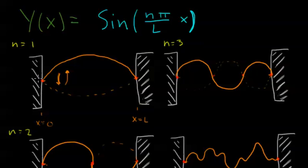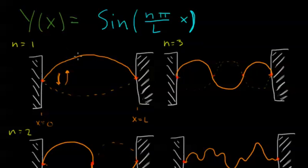So what's happening here? When n equals 1, we know that the roots of sine are 0, pi, 2 pi, and so on. So when n equals 1, we start at x equals 0 — that's 0. As we increase x, we trace along the sine function, and then at x equals l, we hit our first root. Since n equals 1 and l over l equals 1, this is sine pi, and sine pi is 0. So that point is 0, and that satisfies our boundary condition, just like we wanted.